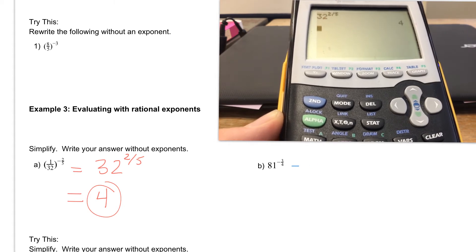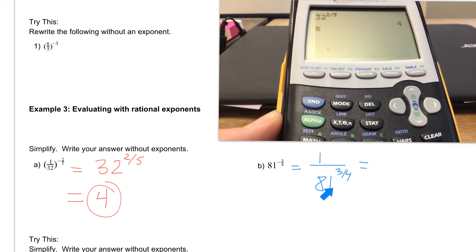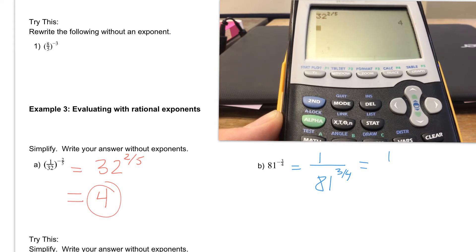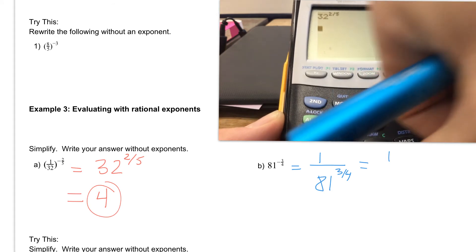And then it's a lot easier to type into your calculator just the denominator. We're going to leave the numerator as a 1 over, and we're just going to type in 81 to the 3 fourths. So we're going to leave the 1 on top, and we're just trying to figure out the denominator. So we're going to type in 81.